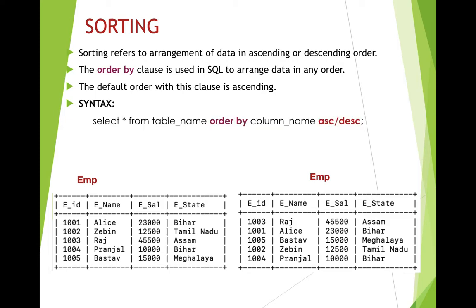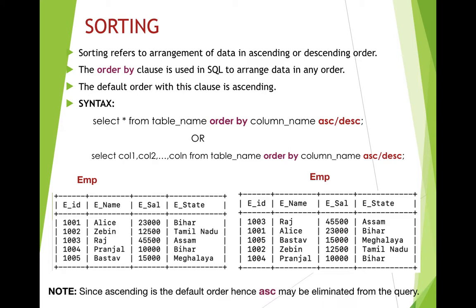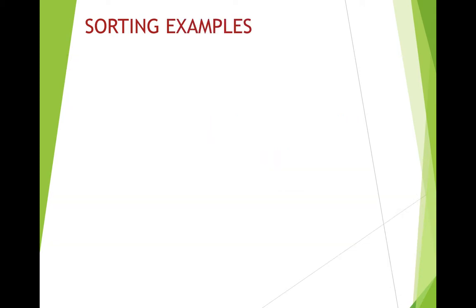The syntax for sorting all columns is: SELECT * FROM table_name ORDER BY column_name ASC/DESC. For example, to sort by employee salary, write: ORDER BY esal. If you want ascending order, you can write ASC or omit it entirely since ascending is the default. For descending order, write DESC. To display specific columns, use: SELECT column1, column2 FROM table_name ORDER BY column_name ASC/DESC.